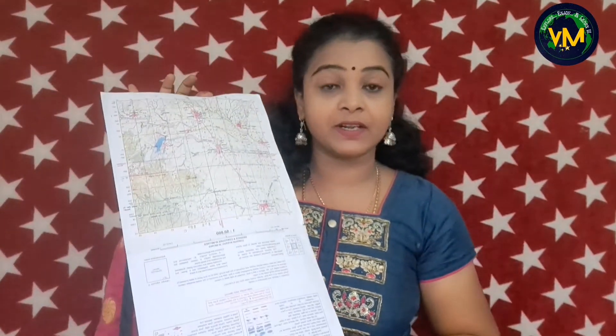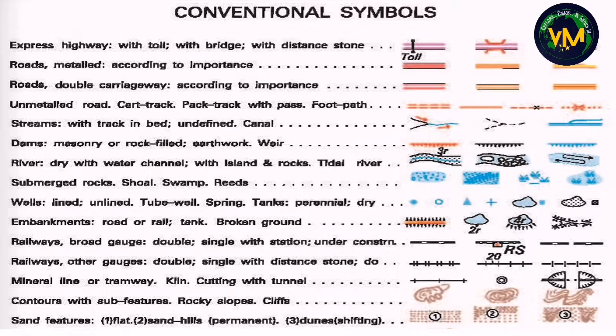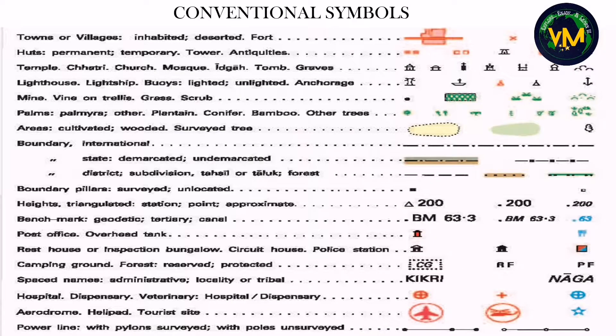I repeat what I told in my previous video: there are so many conventional signs and symbols, so you need not memorize everything, because for the board exam they will be providing you with a topo map and below the sheet you can see all the conventional signs and symbols given. So you need not memorize, but I strongly suggest you to be familiar with these symbols so that it will save you a lot of time in the examination hall. These are the conventional signs and symbols that will be available below the topo map given during your board exam.